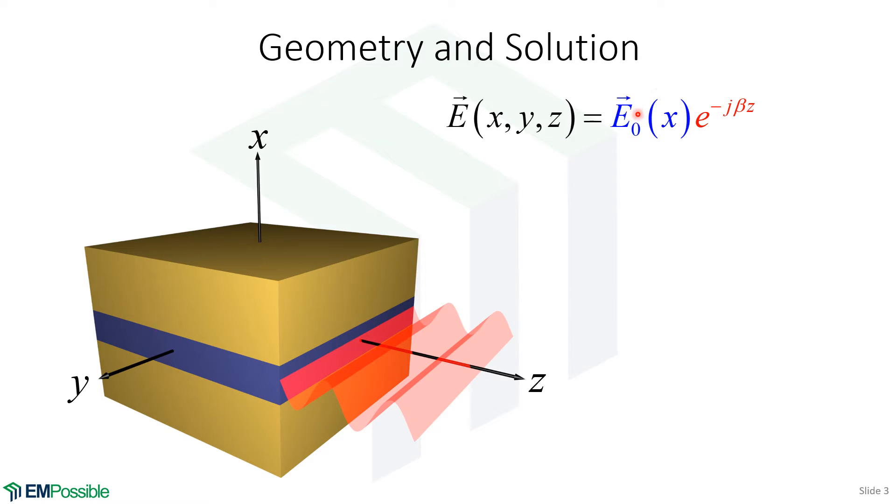There's this amplitude term, and then there's this phase accumulation or oscillation term. So this beta, the phase constant, describes how quickly this mode accumulates phase as it propagates in the Z direction.